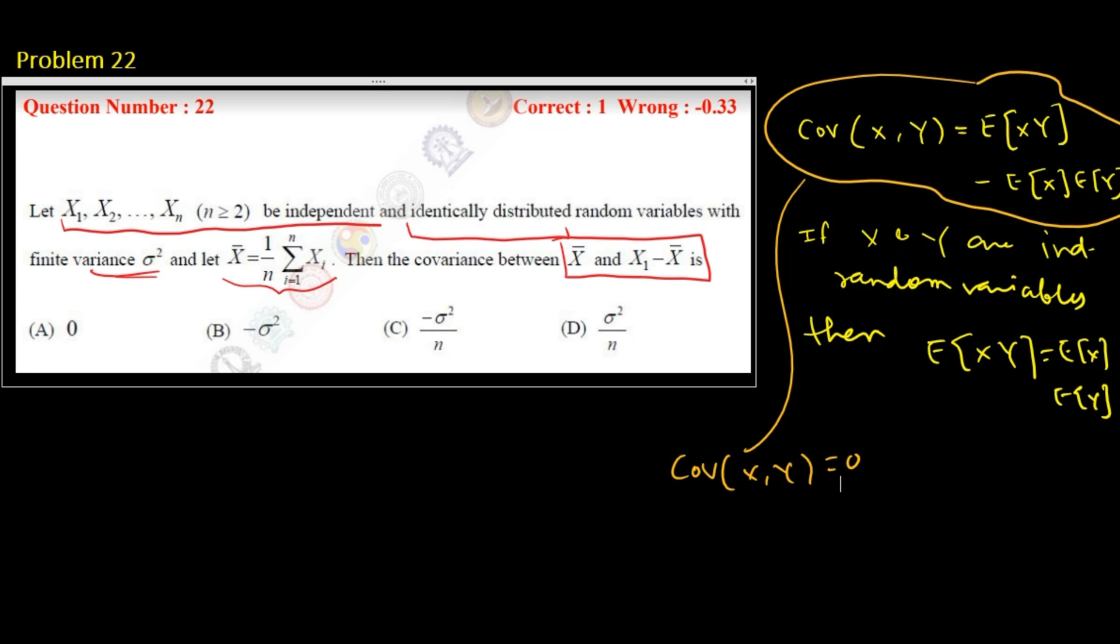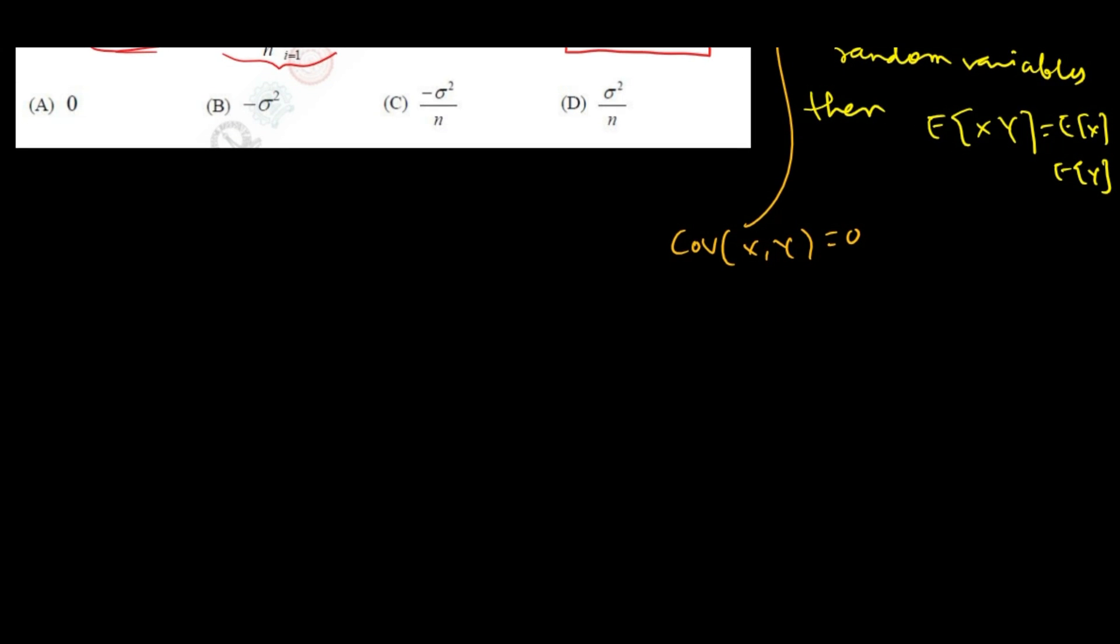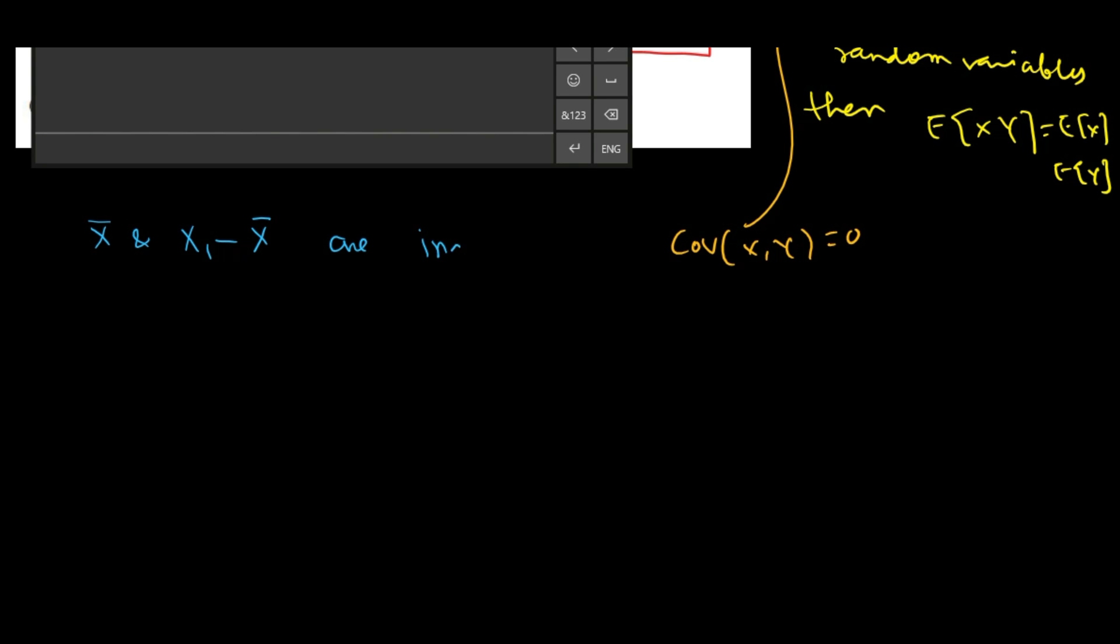So in this problem since x bar and x1 minus x bar are independent random variables, their covariance will be 0.